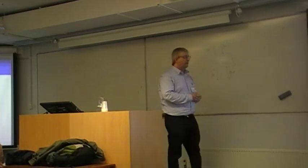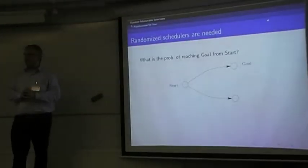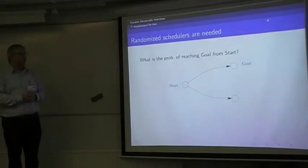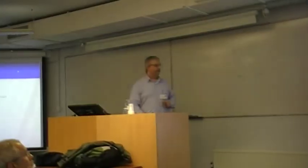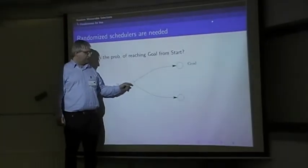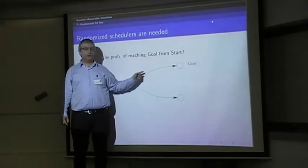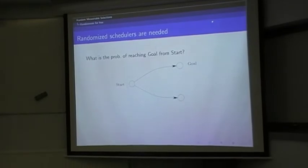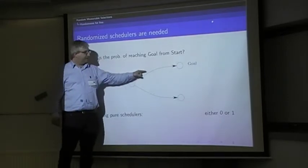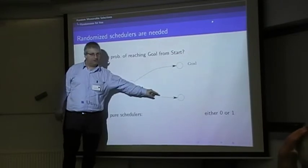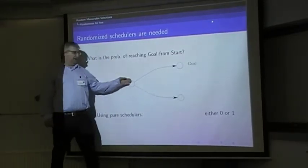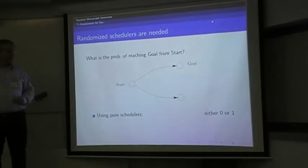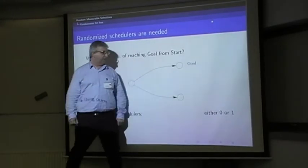Here's one example. It's an incredibly simple transition system, three states, one initial state, one final state. I'm asking you, I'm giving you a scheduler, what's the probability of going from start to goal? If you use pure schedulers, this means you've got a non-deterministic choice between a transition above which chooses this with probability one, or going down, choosing that with probability one. If you use pure schedulers, there are only two pure schedulers here essentially: the one that chooses the upper transition and the one that chooses the lower transition. If you choose the upper transition, then probabilistically you'd have to go to goal and the probability of reaching goal would be one. If you choose the other one, then you go to the other one and the probability of reaching goal would be zero.